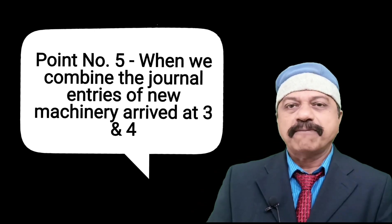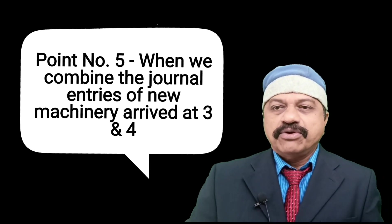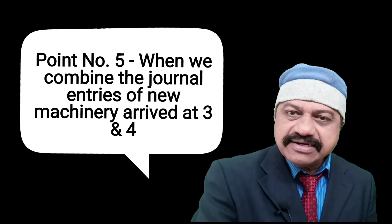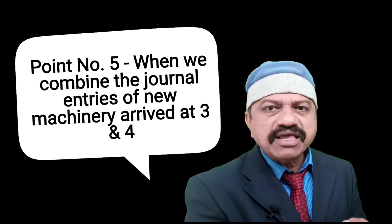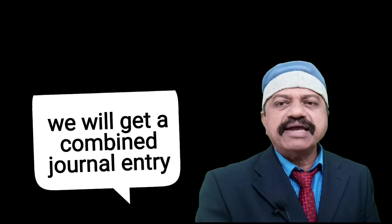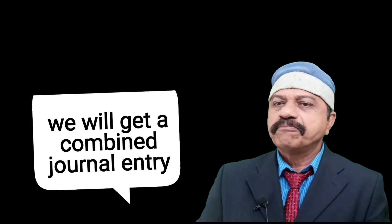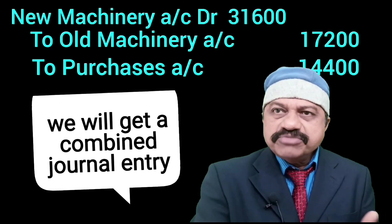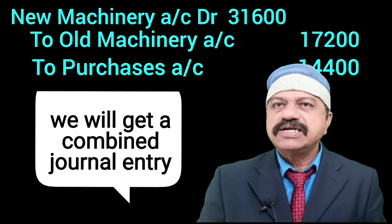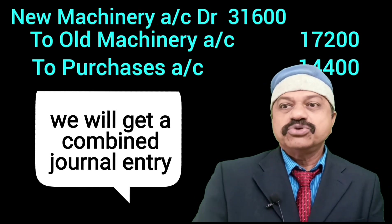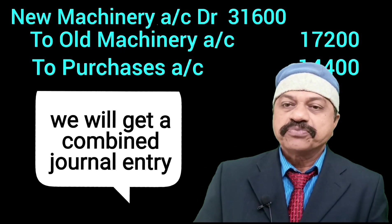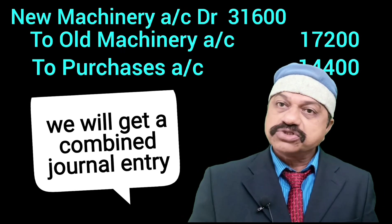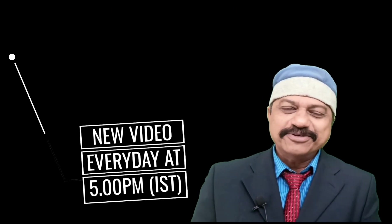Then point number five: when we combine the journal entries of the new machinery arrived at point number three and point number four, we will get a combined journal entry: New Machinery Account Dr 31,600 to Old Machinery Account 17,200 and to Purchase Account 14,400.